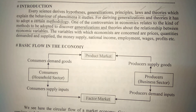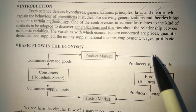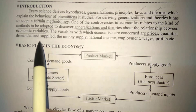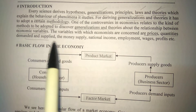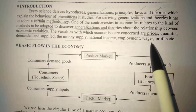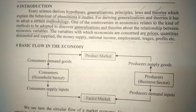The economic variables that economists deal with include prices, quantities demanded and supplied, money supply, national income, employment, wages, profits, and more — these are the things economists are concerned with.